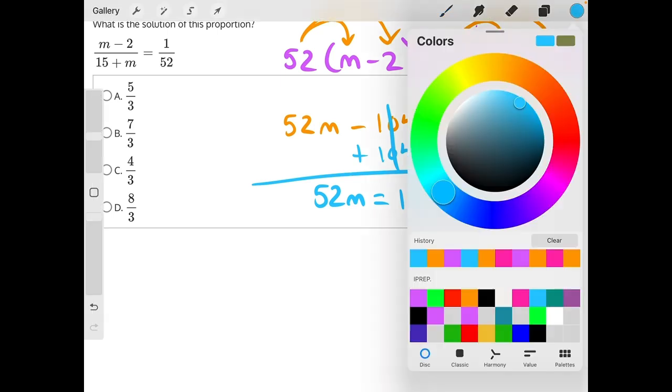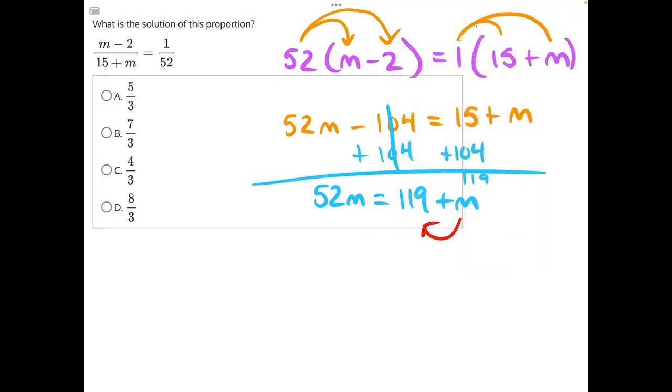Then m is being added to 119, so the opposite would be subtracting it from both sides. These m's will cancel, leaving us with 51m is equal to 119.